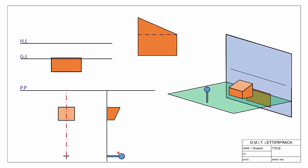That parallel line hits the picture plane, and we can see that in our end view. There's our level line, and there's our parallel line from our spectator giving us our vanishing point. You can see it in our 3D view as well — because it's a level line, our vanishing point is located on the horizon line. So in my perspective view I draw in that vanishing point on the horizon line. This vanishing point is for lines moving in this direction that are level and have no slope.